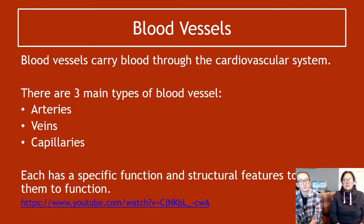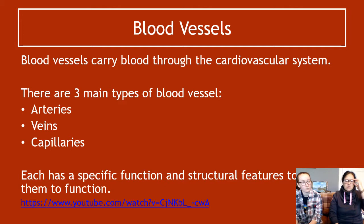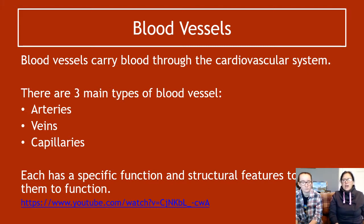The blood vessels carry the blood through the cardiovascular system, and there are three types: arteries, veins and capillaries. We will build a little bit on your National 5 knowledge, but there's not a huge amount added. Each has a specific function, and they also have structural features that help them deal with their function — they are shaped in order to cope with the job they have to do.